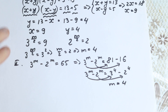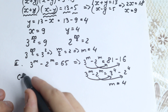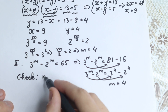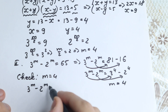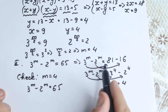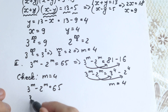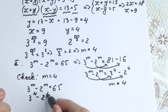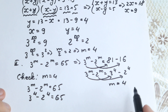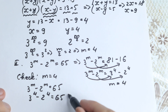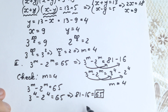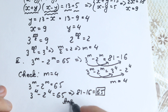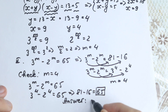Let's check our root. We have m equal to 4. So 3 to the power 4 minus 2 to the power 4 equals 65: 81 minus 16 equals 65. This is absolutely correct. So the answer is m equal to 4.